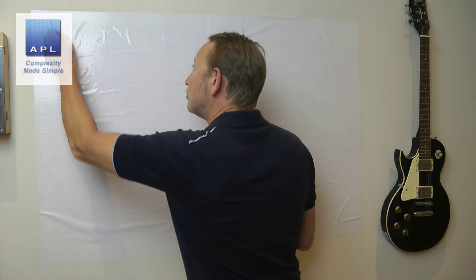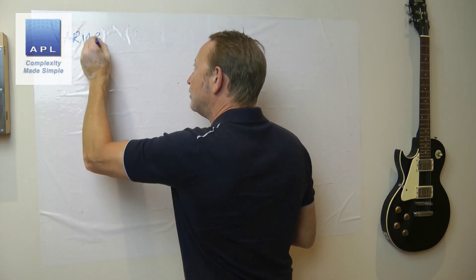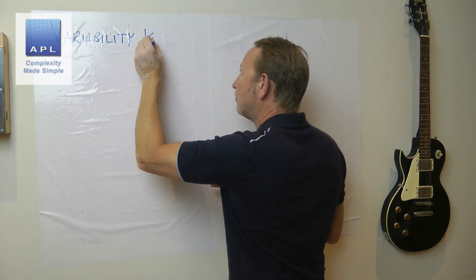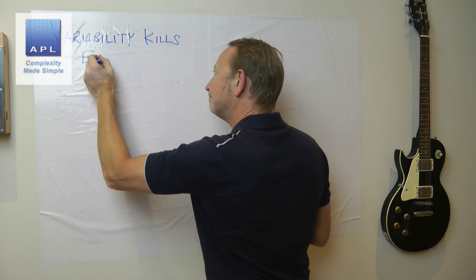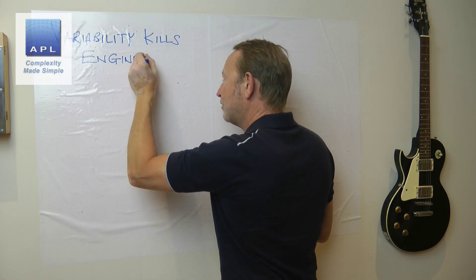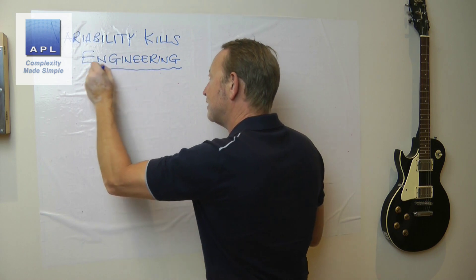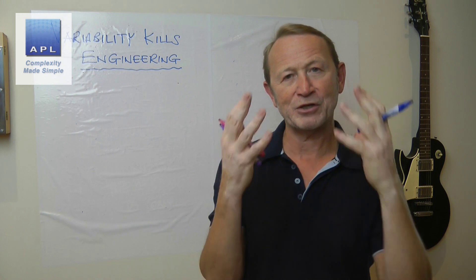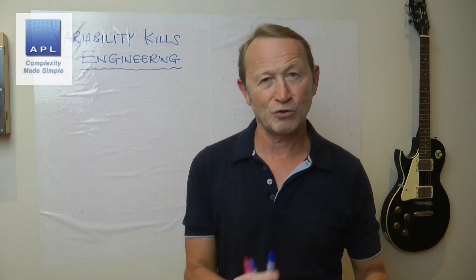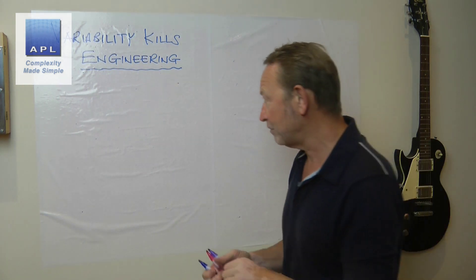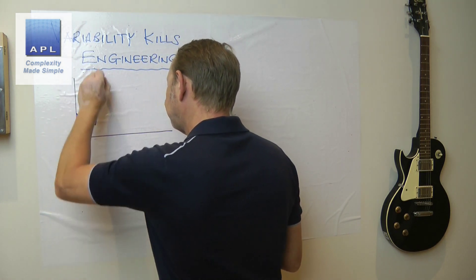Now let's get on with today's video. In this video we're going to talk about variability — how variability in your process performance kills your engineering knowledge. We've talked about variability before from the point of view of what it does to your costs and how it drives lean wastes in your company. But let's talk about how variability kills engineering knowledge. This is another lesson about why variability is the target, not your root cause.